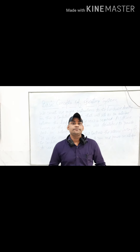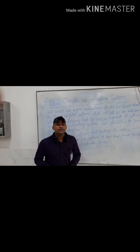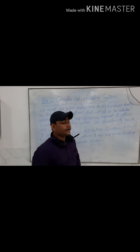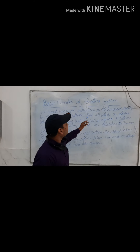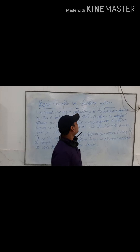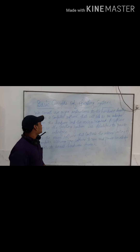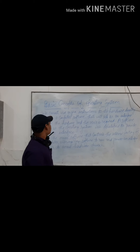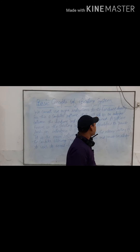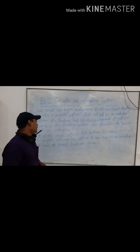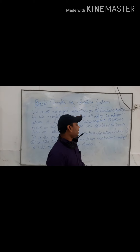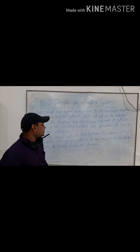Good morning students, today I am going to start the 4th chapter: Basic Concept of Operating System. We cannot use or give instructions to the hardware directly. For this, computer software that will act as an interface between the hardware and the user is required. A software known as the operating system was developed to provide such an interface. It is the main software that controls the internal working of the computer, allowing software to run and providing an interface to the user to access hardware devices.